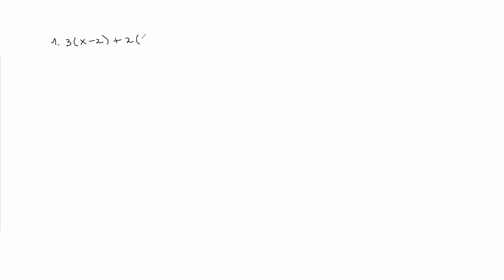Question number one: simplify the expression 3(x - 2) + 2(x + 5). To simplify this expression, we have to use the distributive property, and multiply 3 by x and then by negative 2. We will do the same thing for the second parentheses, and multiply 2 by x and then by positive 5.